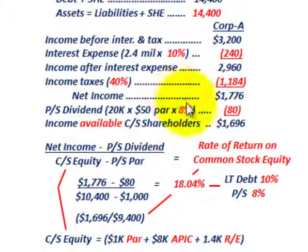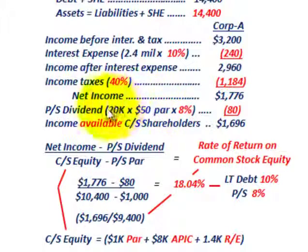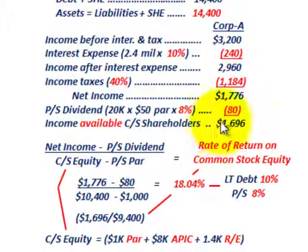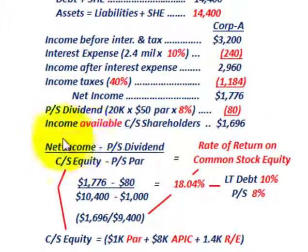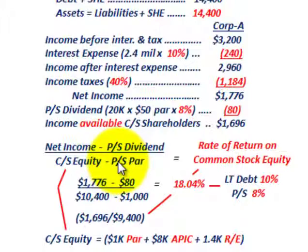We've determined net income. Now we calculate income available to common stock shareholders by subtracting the preferred stock dividend — 20,000 shares times $50 par at 8% equals $80,000 in preferred dividends. Subtracting that from net income gives $1,696,000 available to common shareholders. The rate of return on common stock equity equals net income minus preferred dividends, divided by common stock equity minus the preferred stock par amount.